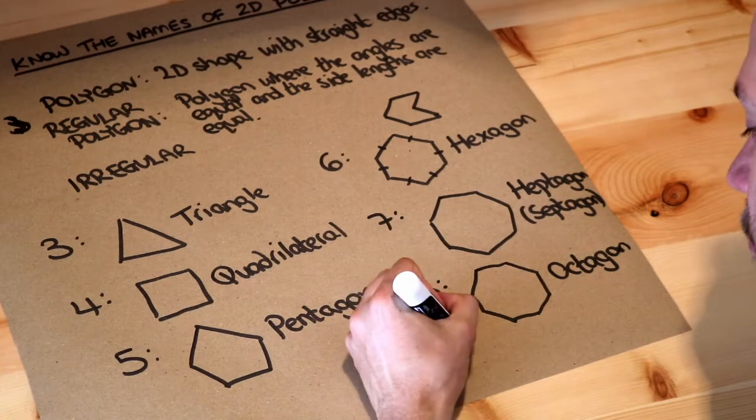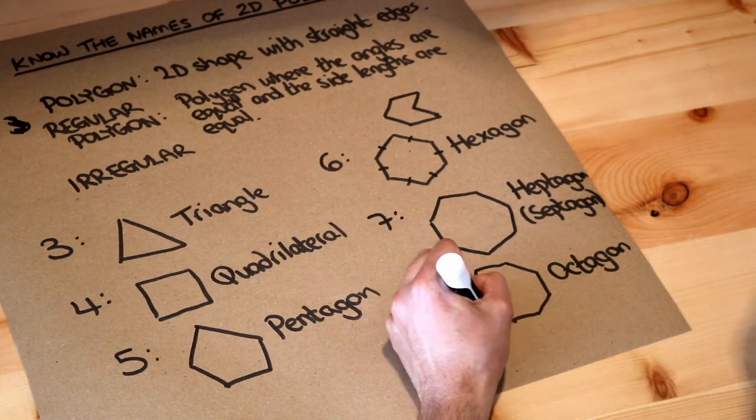And I'm not going to draw the rest but I'm just going to write the names. If it has nine sides it's called a nonagon.